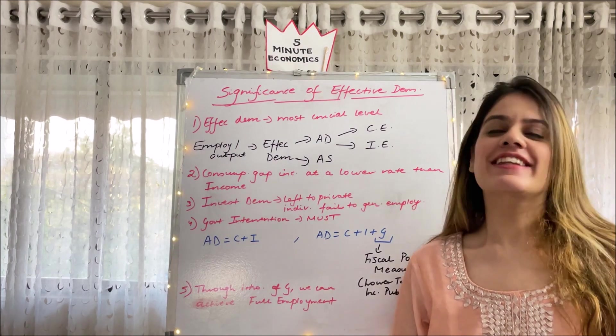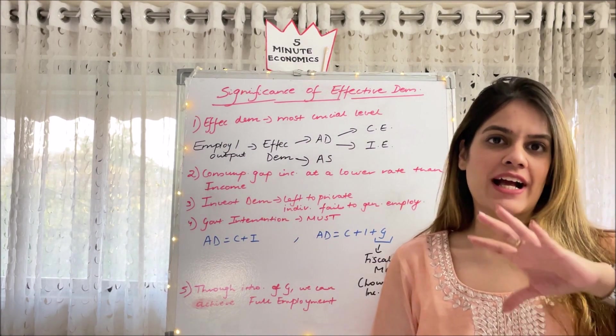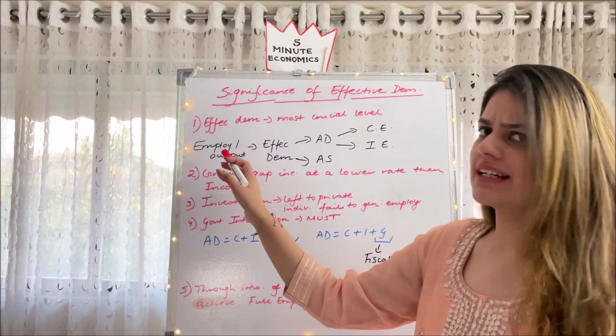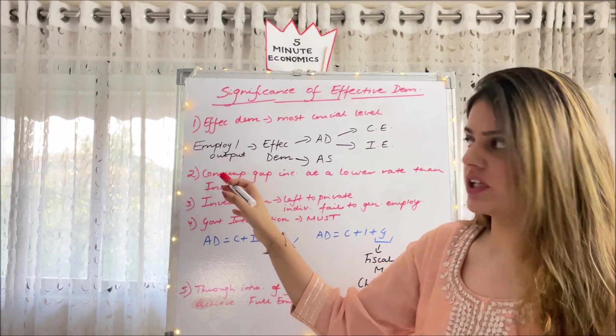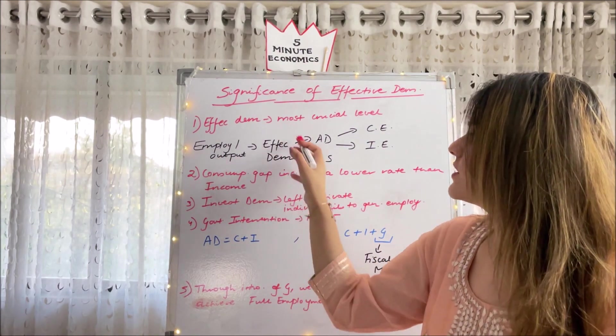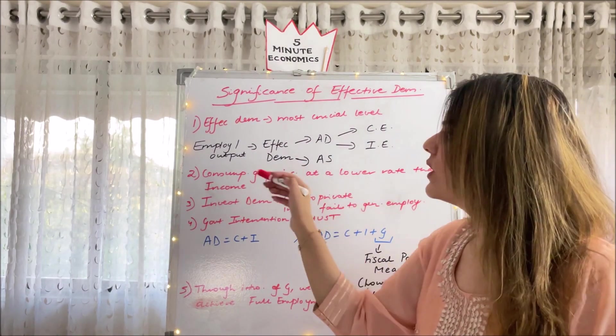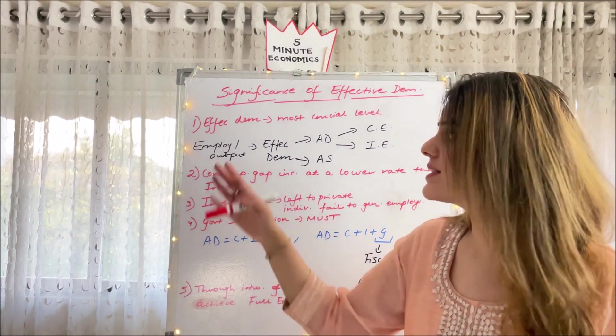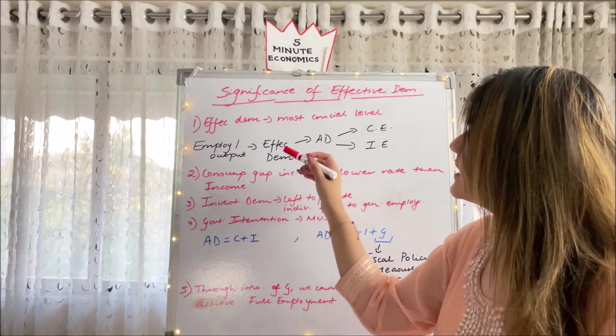So moving ahead to the most crucial element of the Keynesian theory, which is effective demand. Let me give you a quick recap of what actually is effective demand and why are we talking about it. Basically, to generate output and employment in Keynesian theory, we stick to effective demand. Effective demand is the most important thing and this leads to increase in employment and output. If effective demand increases, employment and output increases.